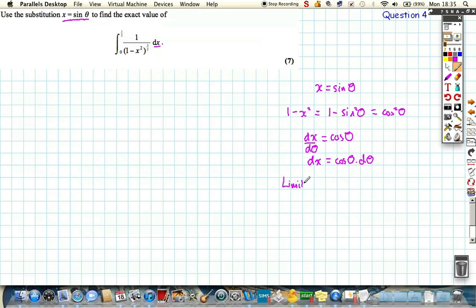And to do that, we just need to work out what theta is. Now we can rearrange theta up here, which means that theta can be sin minus 1 of x, and our limits are in x at the moment 0 and a half.